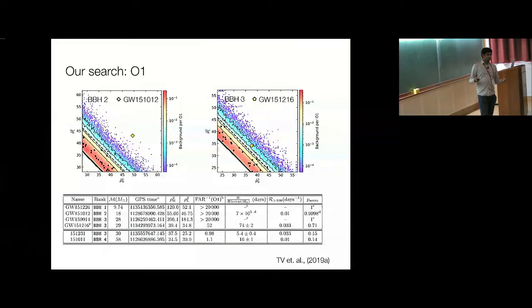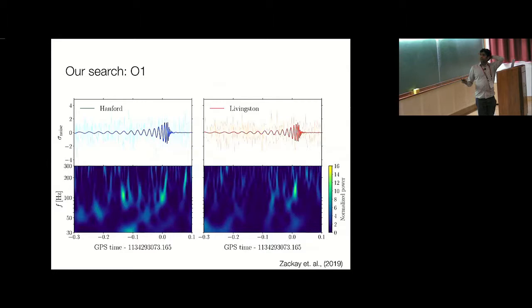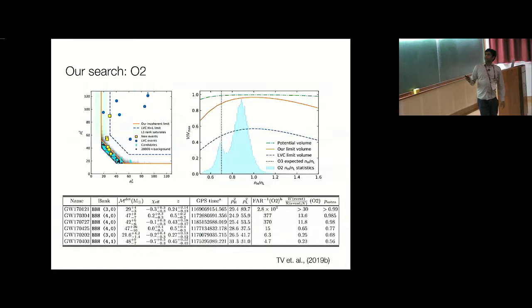This resulting improvement in the background uncovered a new trigger which was above the bar defined by the LVC for calling something an event. That's what we call Astrophysical 151216. This has a false alarm rate of once in six years in its own bank, and if you give it a trials factor it's roughly once in a year. The probability of being astrophysical is 70 percent. The bar that LIGO set is 50 percent. For reference, 170729, which was the heaviest trigger in O2, one of the pipelines in LIGO had a P-astro of 52 percent. It's not unheard of that you have these things. When you're doing a search, you have to be responsible and report everything you find.